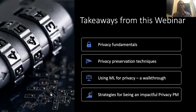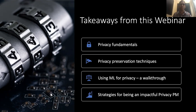At the end of this webinar, I want you to go away with four key takeaways. I'll start by explaining how privacy is important and why it has become so important in today's world. For part two, I'll talk about privacy preservation techniques used in industry and academia. For part three, I'll do an end-to-end walkthrough of using machine learning to protect privacy. And I'll leave you with tips and strategies on how to be an effective product manager in privacy.